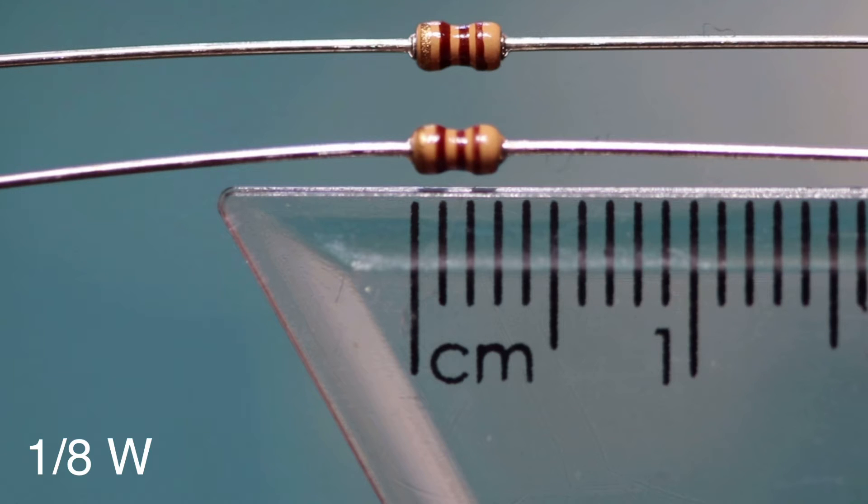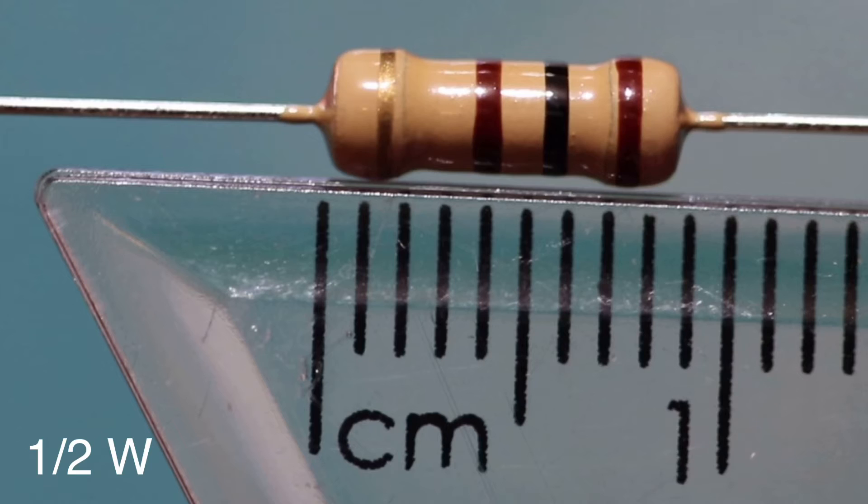These smaller resistors are rated to one-eighth of a watt, quarter of a watt, half a watt, and one watt.